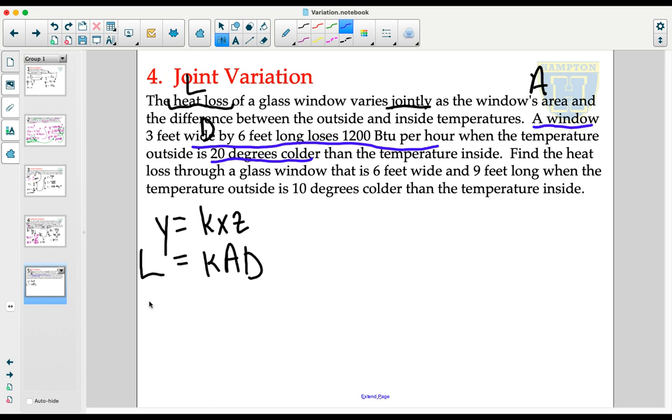Substituting in those numbers that we know, we lost 1,200 BTU. We don't know what K is, that's what we're going to figure out. We know the area of the window as a three by six window is 18 square feet times the 20 degree difference. 1,200 is equal to 18 times 20 is 360. We divide both sides by 360, and we get that K is 3.3 repeating.